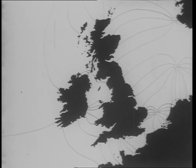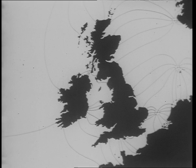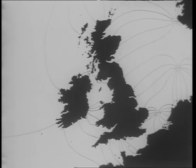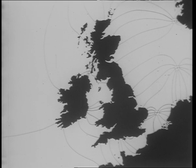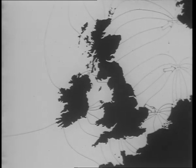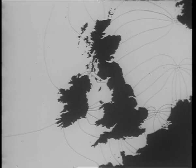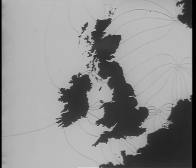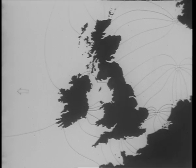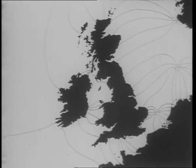They are called amphidromic points because the tides appear to rotate around them. This is suggested by the 12 lines which radiate from the points. The lines are called co-tidal lines, and each one shows where high water occurs at a particular hour of the tidal cycle. There are three systems in the North Sea and one to the north of Ireland, one off screen to the north in the region of the Faroes, and one to the west in mid-Atlantic.